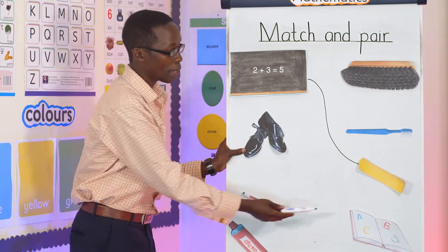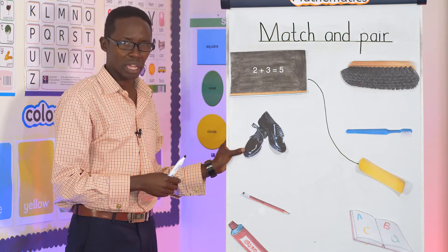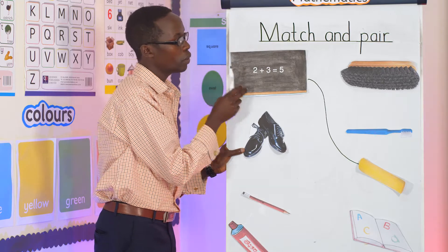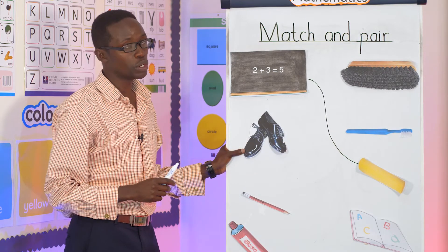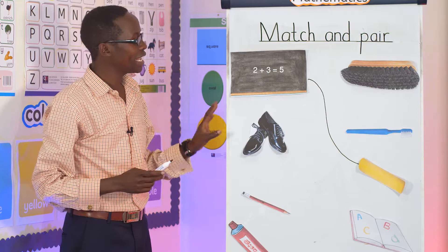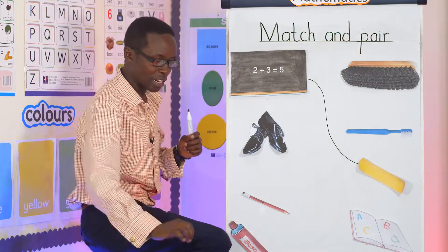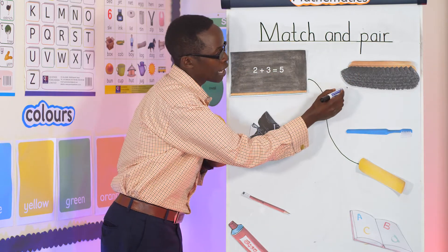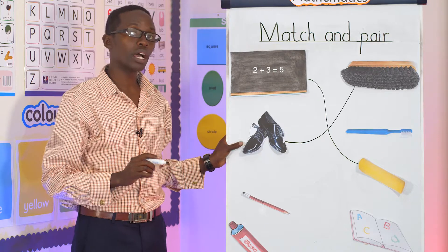Now let's go to shoes. What do we use together with shoes? Do we use a book? No. Do we clean shoes with a chalk? A chalk is used with a blackboard. What about a toothbrush — do we use it to brush our shoes? No. What about a shoe brush? Yes! When the shoes have a lot of dust, we use the shoe brush to polish them. We match shoes with the shoe brush.